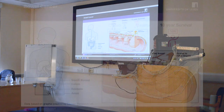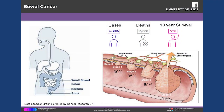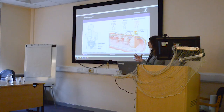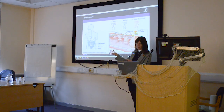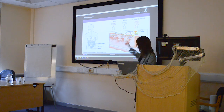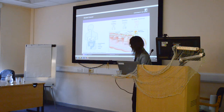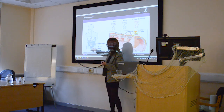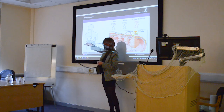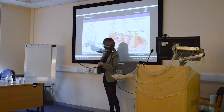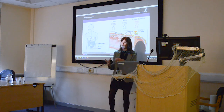Our primary focus is on bowel cancer. I've pulled some statistics from the Cancer Research UK website. On a diagram of the body, our food goes in the top, we digest it, and it comes out from the bottom — literally. When we talk about bowel cancer, we're referring to the large bowel going down into the rectum and then the anus. That's the area we're primarily working in.